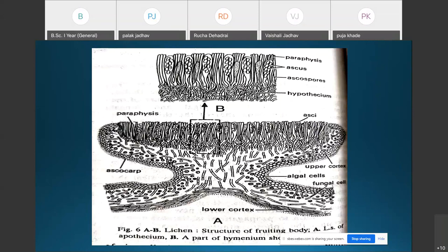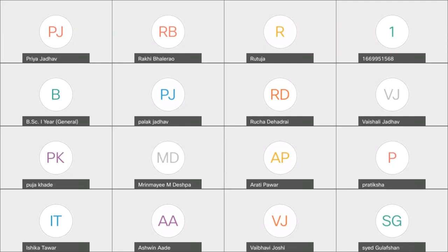The ascospores vary considerably in their shape, size, structure, and septation. They are hyaline, greenish, or brown in color and are released gradually from the ascus. The ascospore produces a hypha on germination, and this hypha, when it comes in contact with a suitable alga, forms a new lichen thallus.